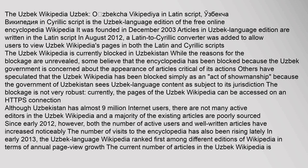However, both the number of active users and well-written articles have increased noticeably. The number of visits to the encyclopedia has also been rising lately. In early 2013, the Uzbek language Wikipedia ranked first among different editions of Wikipedia in terms of annual page-view growth. The current number of articles in the Uzbek Wikipedia is 128,721.